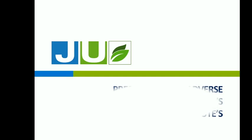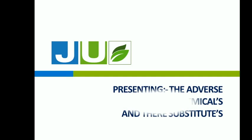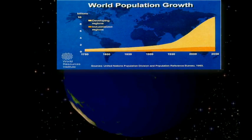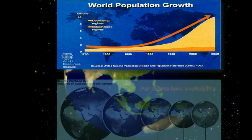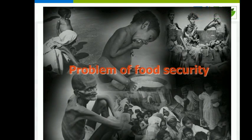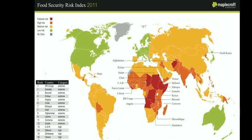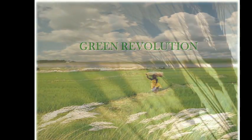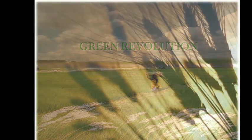Here we present the adverse effect of chemicals and substitutes for them. The world population is growing day by day and per capita land availability is decreasing. This is causing the problem of food security. This image is showing the risk zones. At the beginning of the green revolution, the demand and production mismatch was significant.